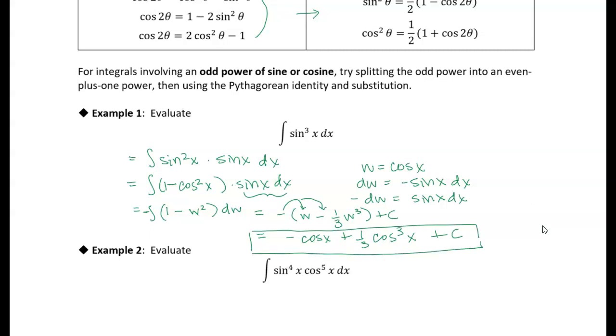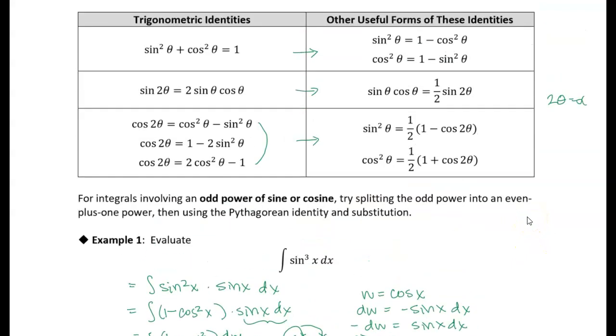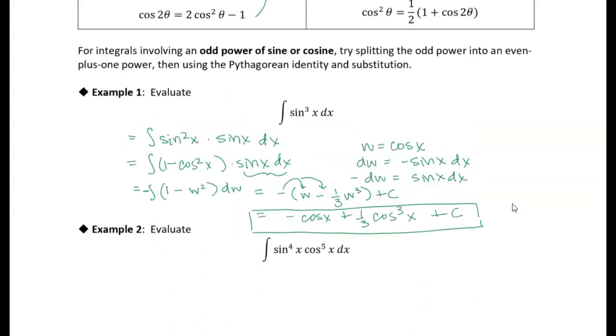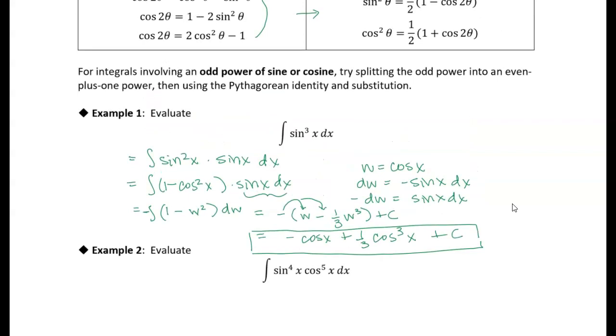All right, so that's really the idea involved here, is just breaking. Because all of our identities, if I look back up at these identities, I have a lot of sine squareds and cosine squareds involved, and so it's easier to work with even powers of a trig function than it is odd power. So to break off one piece of the odd power, you're left with an even power. So that's example one.